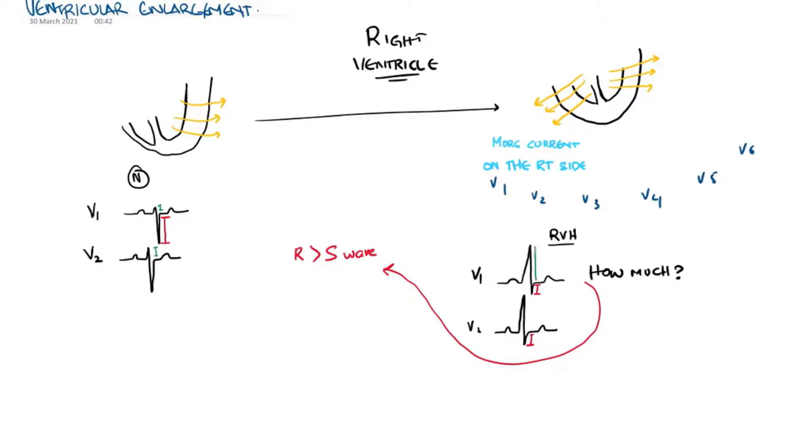You can see tiny R complexes in a normal heart, but in a heart with right ventricular hypertrophy, you can see tall positive R wave complexes in RVH. And these are definitely bigger than the depth of the S waves in right ventricular hypertrophy.